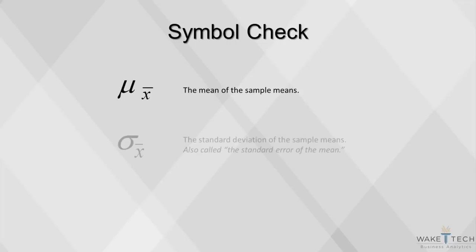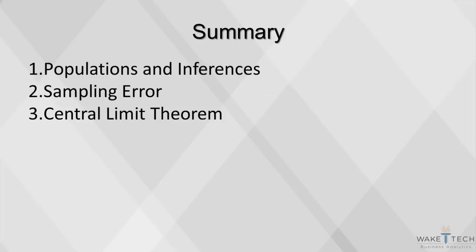Note the symbols here. The mean of the sample means is noted as mu of x-bar. The standard deviation of the sample means is written as sigma of x-bar, and is also called the standard error of the sample mean. That concludes our video. Today we covered populations and inferences, sampling error, and the central limit theorem.